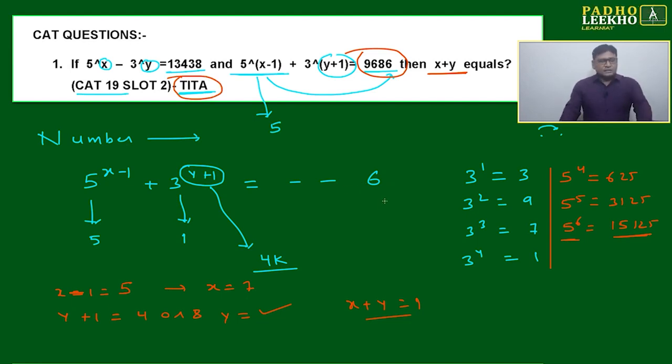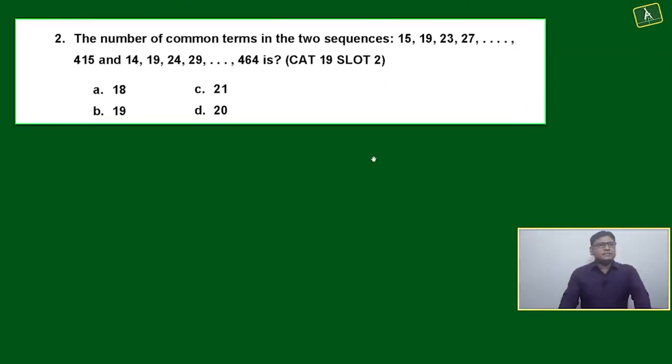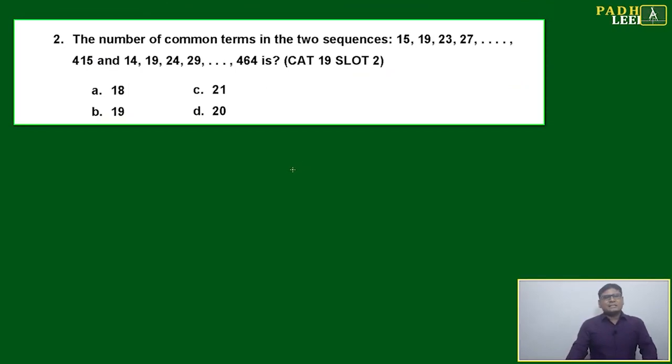We'll move to the second question. This is further interesting and a typical question we are facing many times. Another problem is all the option choices are very nearby: 18, 19, 20, 21. If there's a little mistake here and there, we will be forced to make a mistake. How to solve this question?